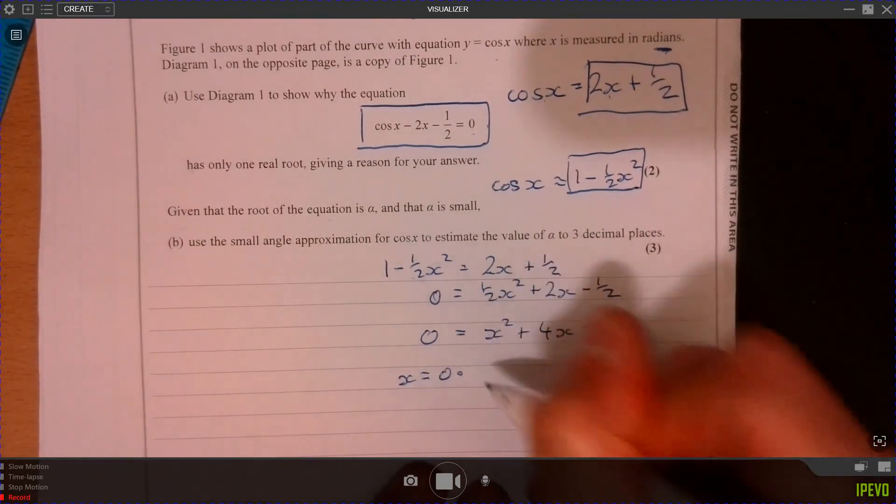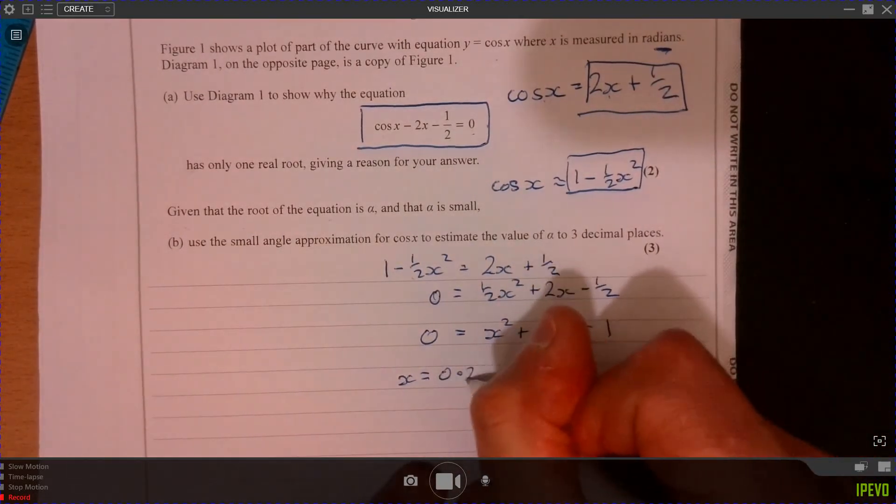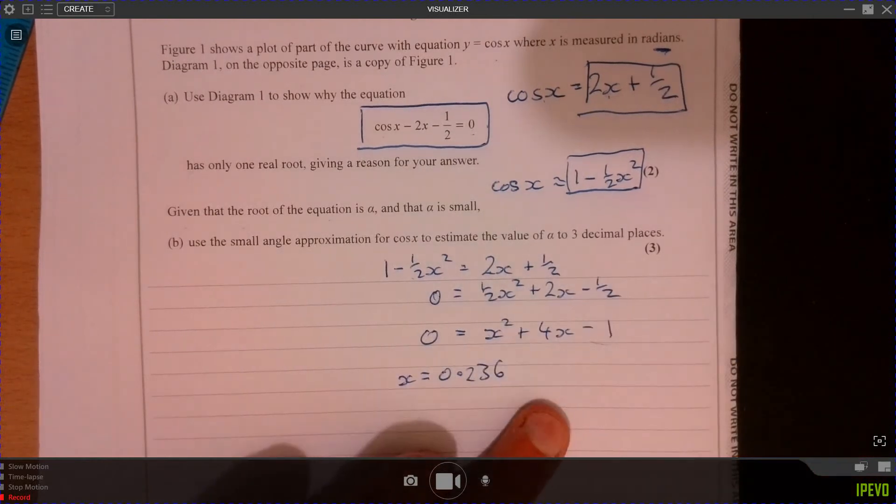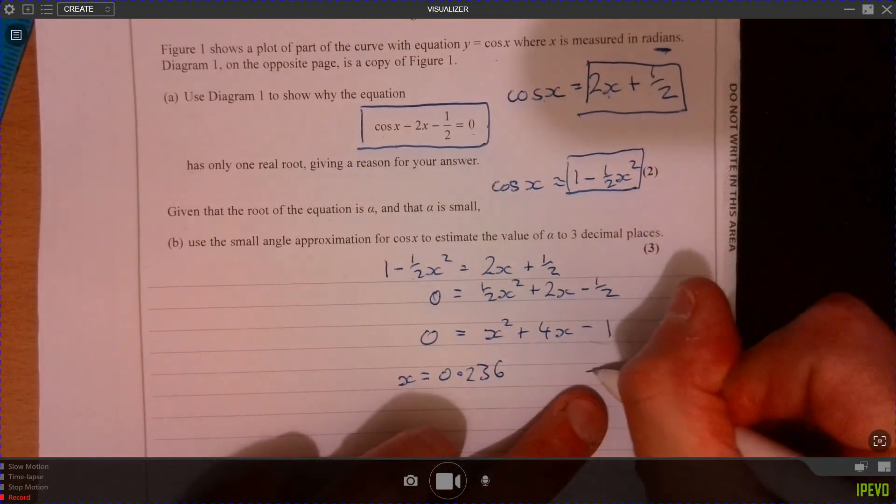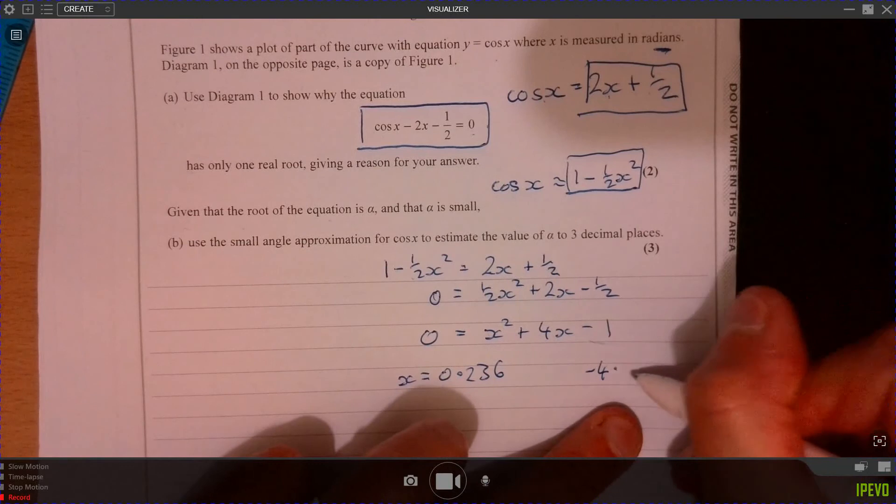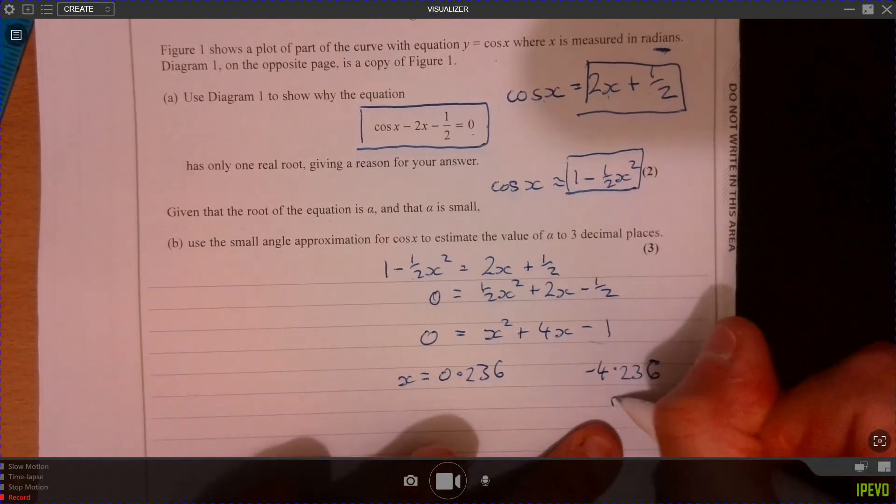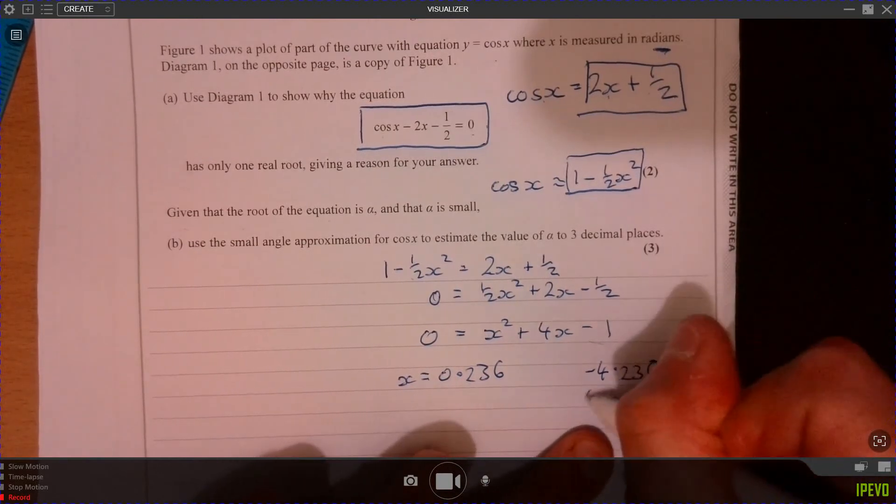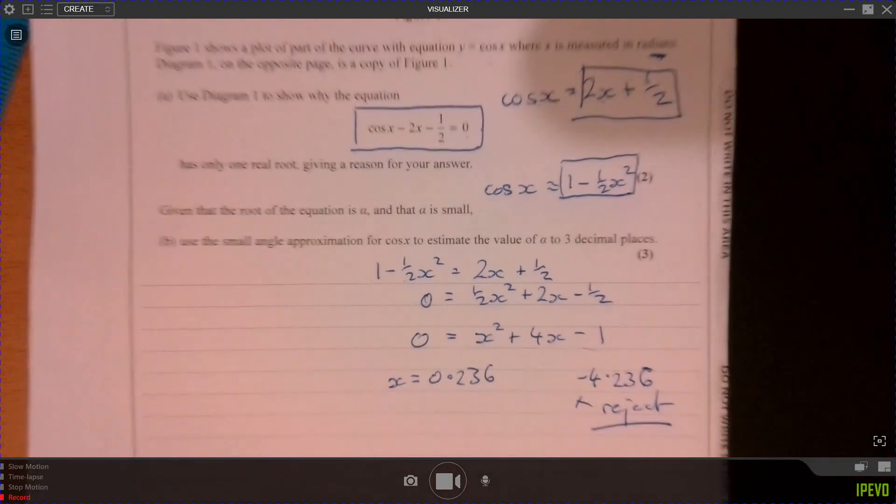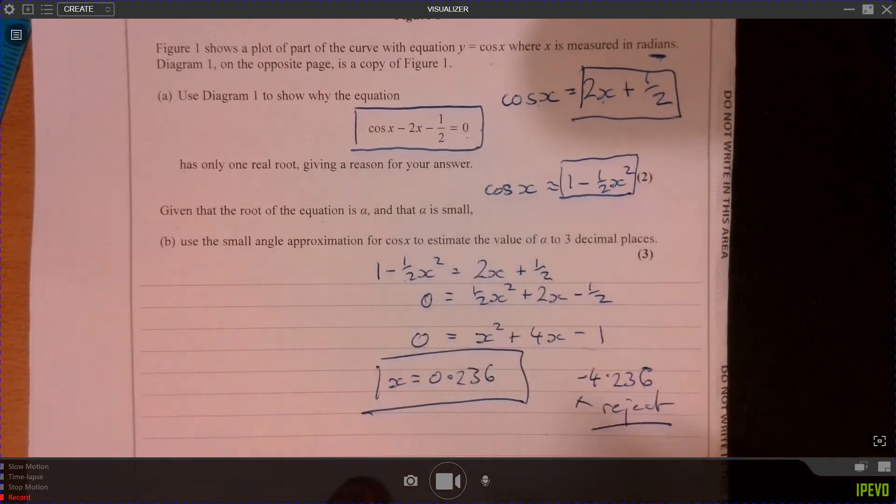You'll get 0.236 and you'll also get minus 4.236. So reject this one, just doing that from the diagram. There's our solution.